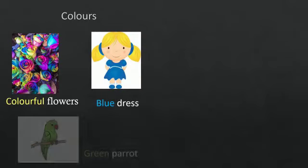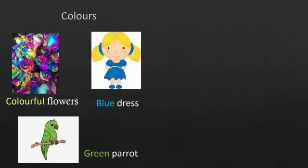Colourful flowers, blue dress, green parrot. Here, blue, green, colourful all describe the nouns or the naming words. Therefore, names of colours that describe the naming words or the nouns are adjectives.